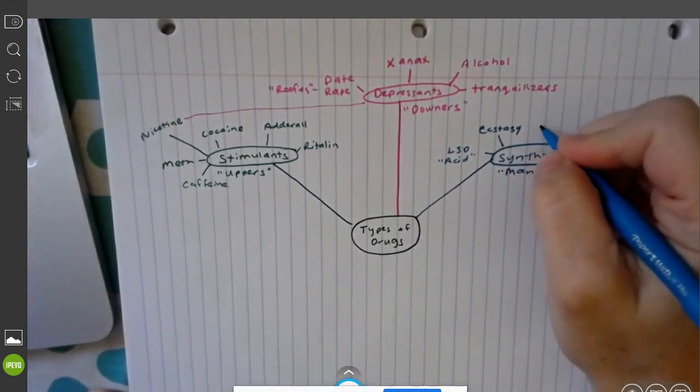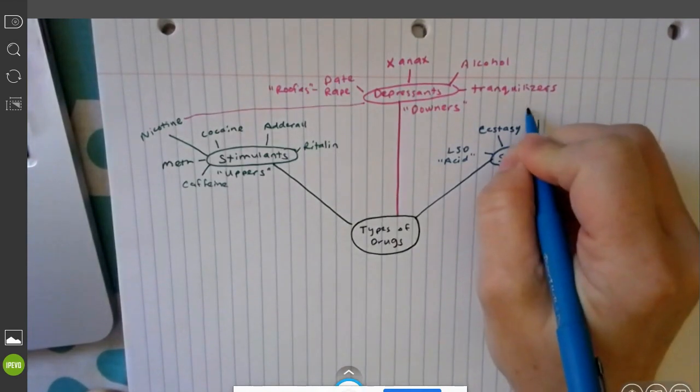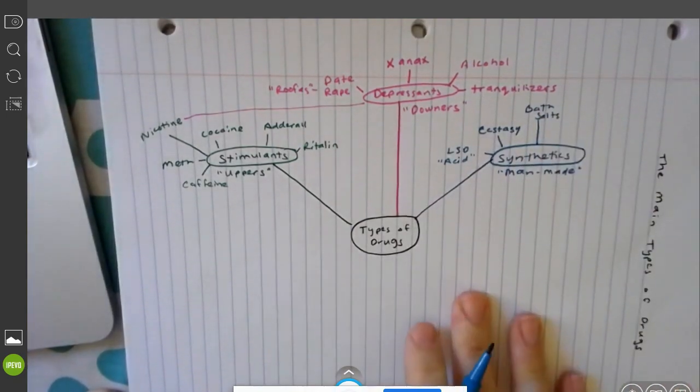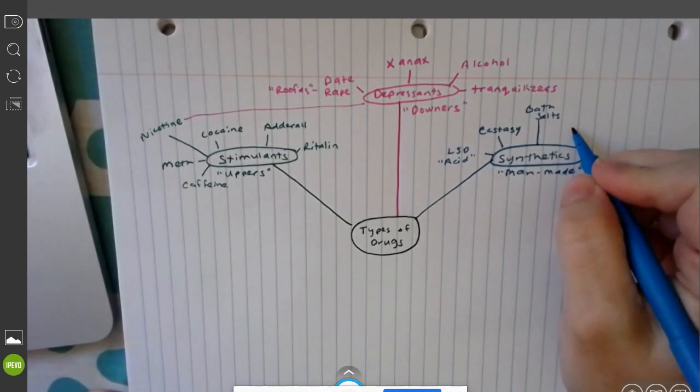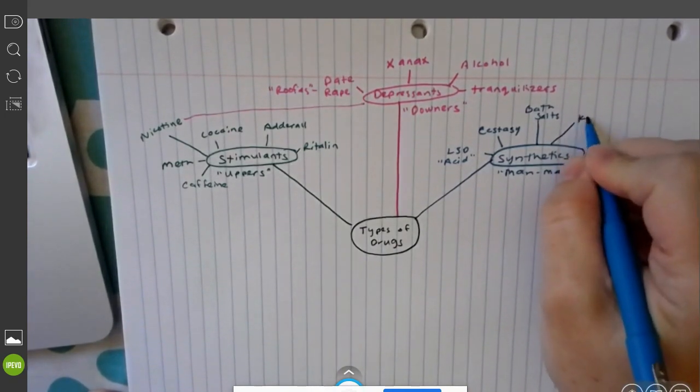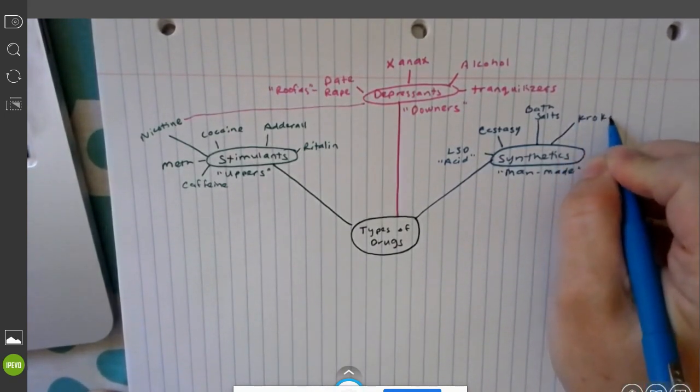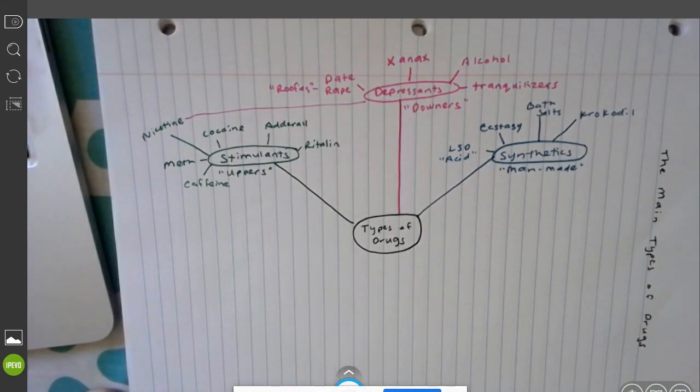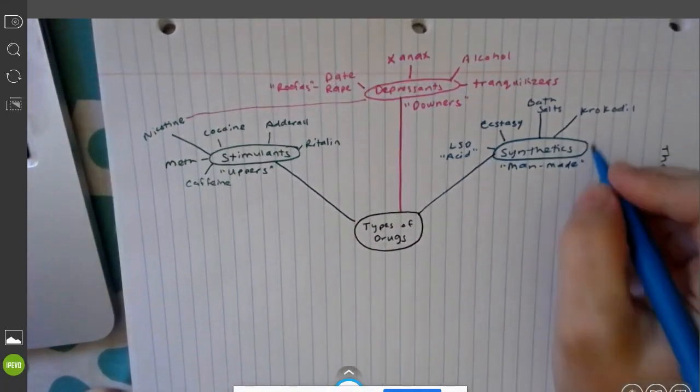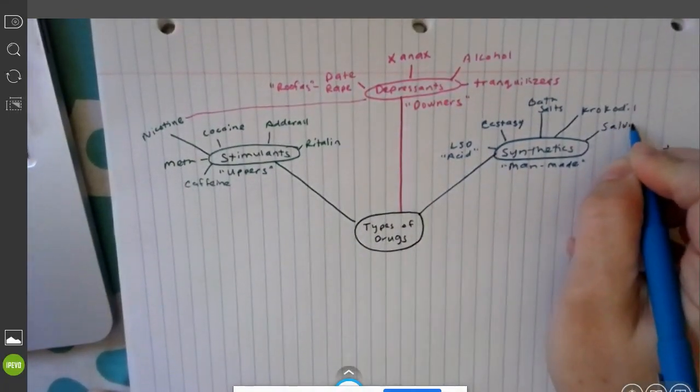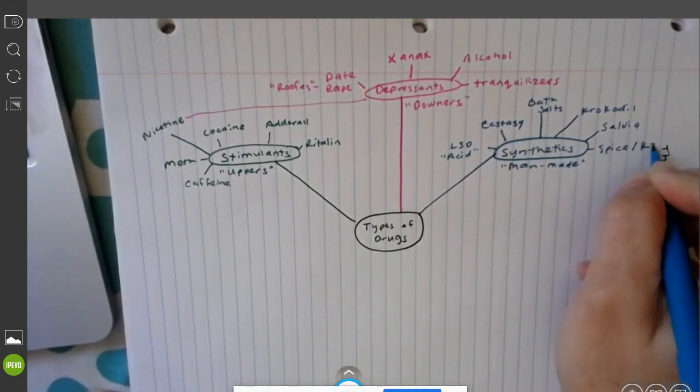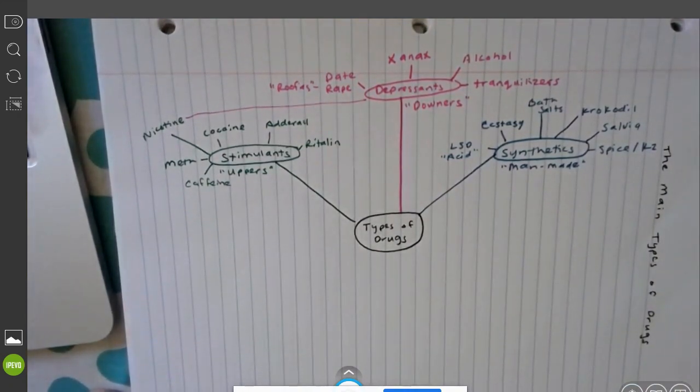You have your super dangerous ones like bath salts which cause people to get into a zombie-like state. There was one that made the skin like black and blue and scaly and look at crocodile skin, so it got nicknamed crocodile. Salvia, that's a hallucinogen, synthetic marijuana which is spice or K2. These are the main designer drugs that we will be focusing on or synthetic drugs.